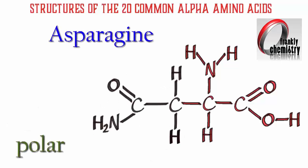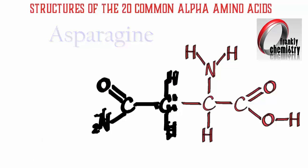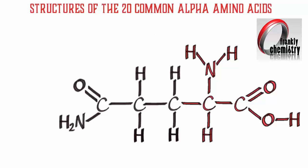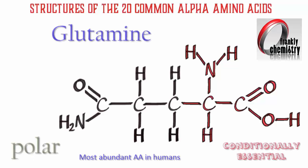This is asparagine. You'll notice that it has a primary amide as part of its R group. Amides are neutral, of course, but asparagine fits into the polar category. Hydrogen bonds can be formed using the O and N of the amide linkage — hydrogen bonds with water. Moving on, the next amino acid is called glutamine, which also has an amide group as part of its R group, but it's polar too.